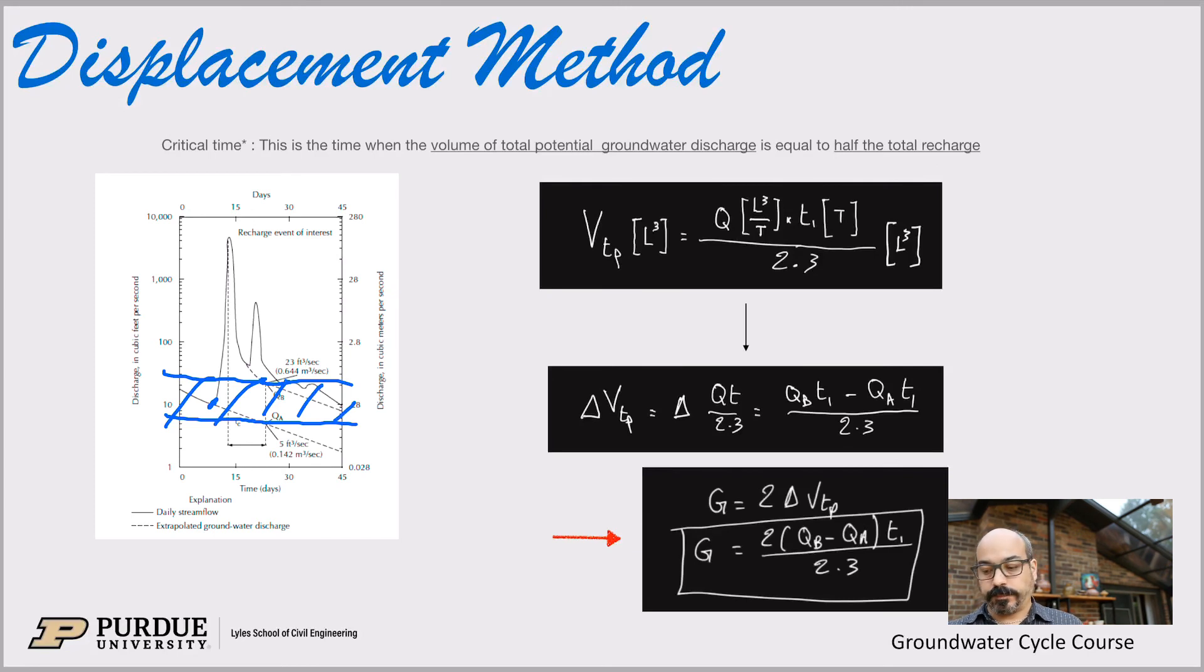Now again, at the critical time, we said, that's when the volume is half. So now we have half of that volume remaining at the critical time. So if you look at this, this is roughly true here. So when you have half the volume remaining, you can say that G equals two times delta VTP. Because again, that's when it's half, so you multiply it by two. So two times delta VTP is the total amount of groundwater, so this total amount here. You can calculate as two times delta VTP.